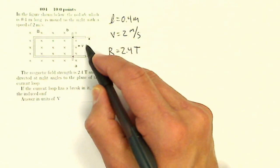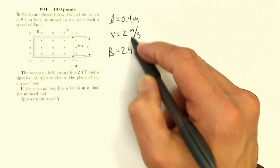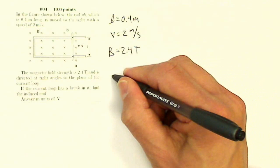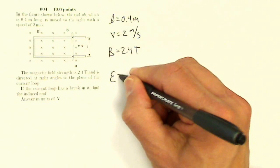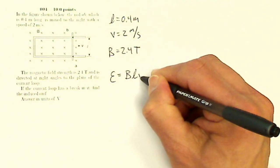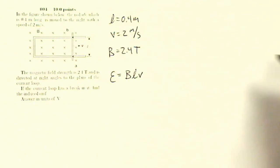So if this rod is moving to the right, and it's got a length, and it's got a velocity, and I know the B field, I know that the induced EMF in that rod is going to be BLV. So that's a pretty straightforward question.